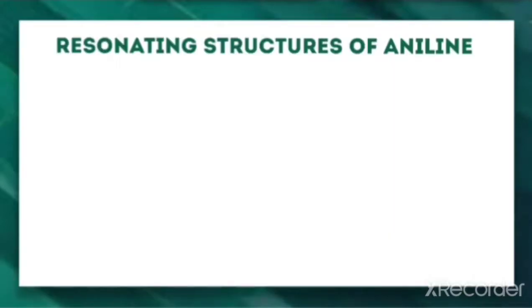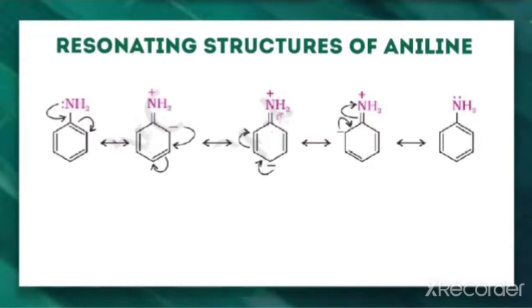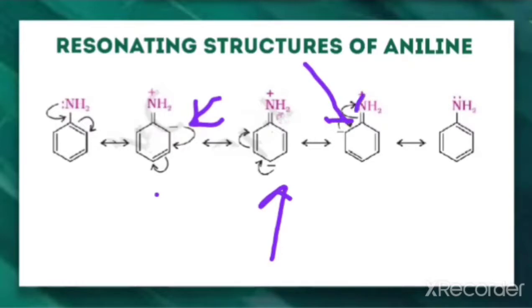As we have already learned the resonance hybrid structures for aniline, when we compare the five resonating structures of aniline shown here, the electron density is maximum at the ortho position in one structure, maximum at the para position in another, and also at the ortho position in another, because the negative charges in these structures are on the ortho and para positions.